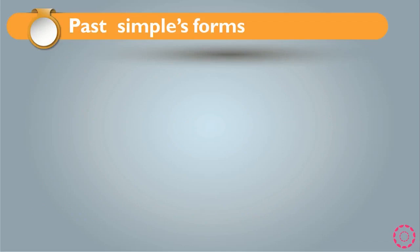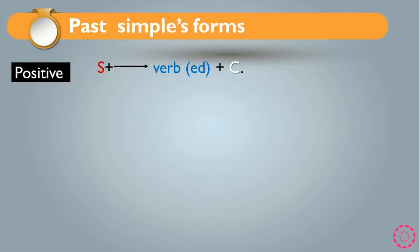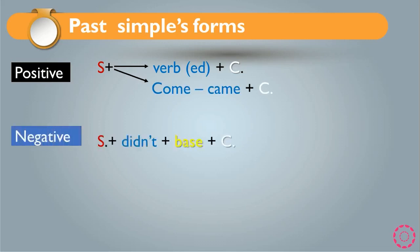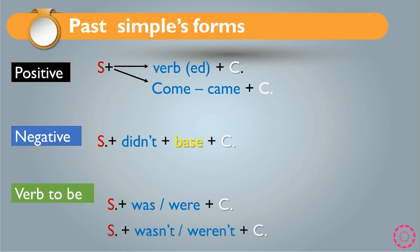Now we have the past simple forms as a summary and review. For positive sentences: subject + verb with -ed + complement, or with irregular verbs — for example, 'come' becomes 'came' + complement. For negative: subject + didn't + base + complement. For the verb 'to be': subject + was/were + complement, or subject + wasn't/weren't + complement. These are the rules of the past simple.